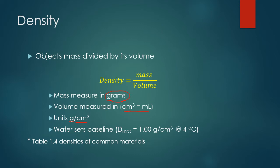Water sets the baseline for density at one gram per milliliter. If you want a table of other densities, you can find that in your book — I believe it's Table 1.4.